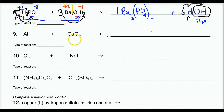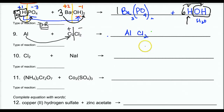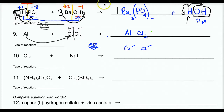Put a 1 there if you'd like. Type of reaction is definitely double replacement. Number 9: I don't have a positive and negative side that allows double replacement, so I can only single replace. This is a single replacement reaction. The aluminum is going to replace the copper. Aluminum is going to hook up with the chlorine.